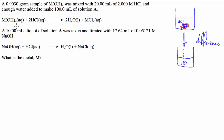So let's see what we've got here. We've got a 0.903 gram sample of an unknown metal hydroxide mixed with 20 mils of 2 mole per litre hydrochloric acid, and enough water added to make 100 mils of solution A. The reaction involves this unknown metal hydroxide plus two hydrochloric acids, which neutralizes to form a salt and some water.